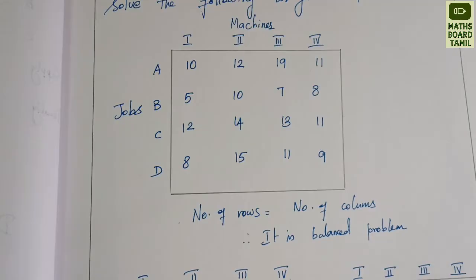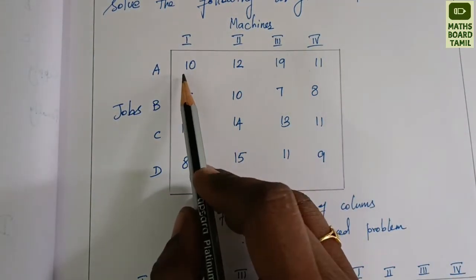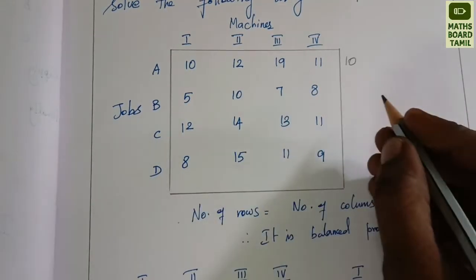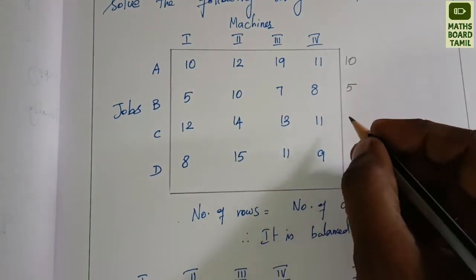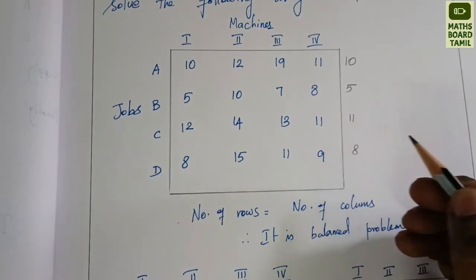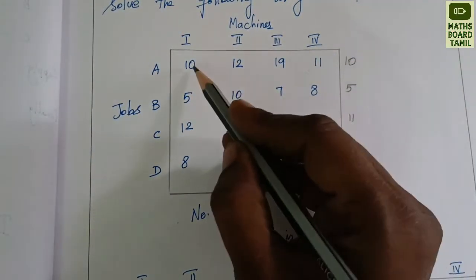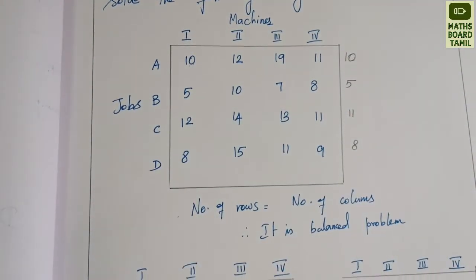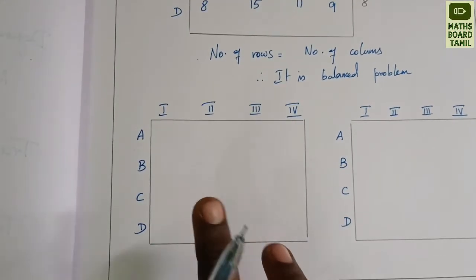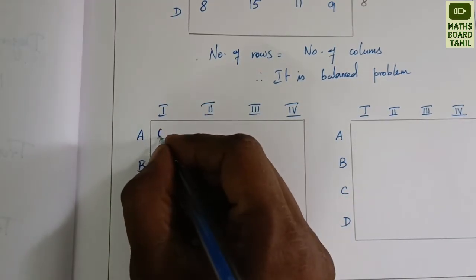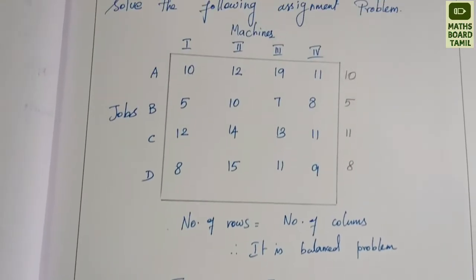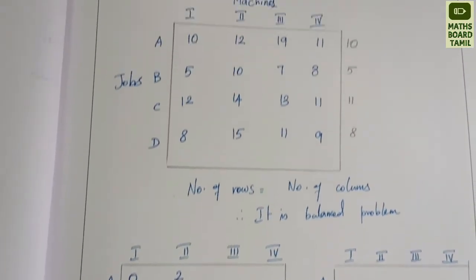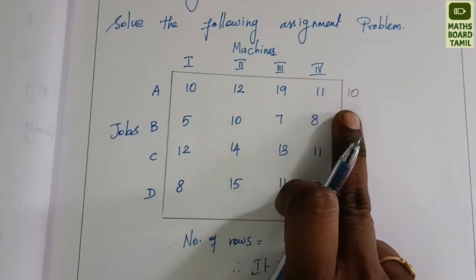First, we perform row reduction. For each row, we subtract the row minimum. Row 1 minimum is 10: 10−10=0, 12−10=2, 19−10=9, 11−10=1. Row 2 minimum is 5: 5−5=0, 10−5=5, 7−5=2, 8−5=3.